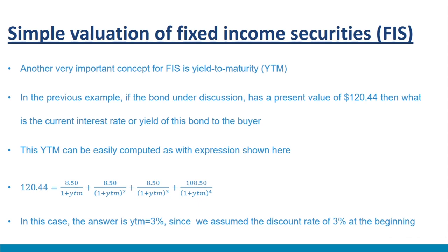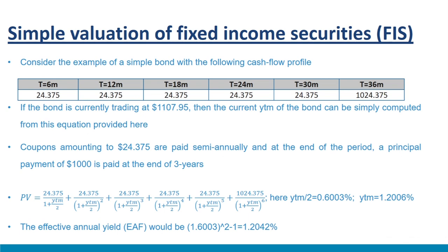Many software packages and financial calculators are available to calculate yield to maturity easily. Consider a bond with semi-annual coupons of $24.375 and a principal payment of $1000 at the end of 3 years. If the bond is currently trading at $1107.95, the YTM can be computed as: 1107.95 = 24.375/(1+YTM/2) + 24.375/(1+YTM/2)² + ... + 1024.375/(1+YTM/2)⁶. Here, YTM/2 = 0.6003%, so the quoted annual YTM = 1.2006%.